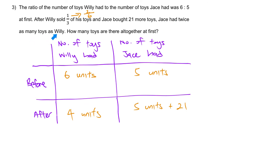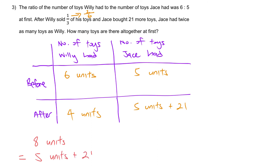Jase had twice as many toys as Wheelie. If we take Wheelie's 4 units and multiply by 2, it equals Jase's amount. Hence, 8 units equals 5 units plus 21. Therefore, 21 must be 3 units. So 3 units is equal to 21, meaning 1 unit is 21 divided by 3, which gives us 7.